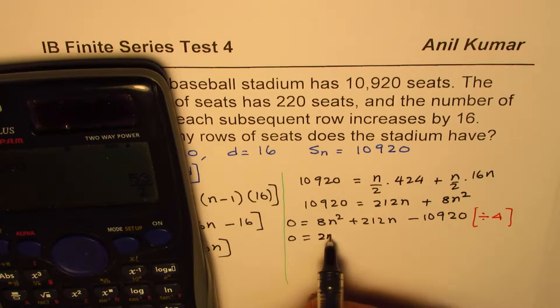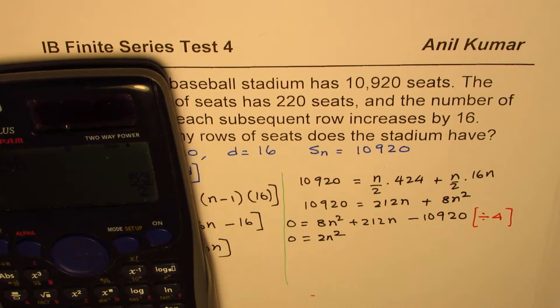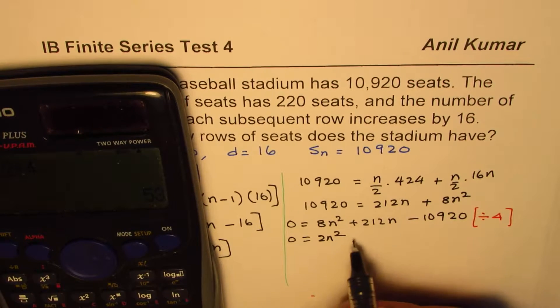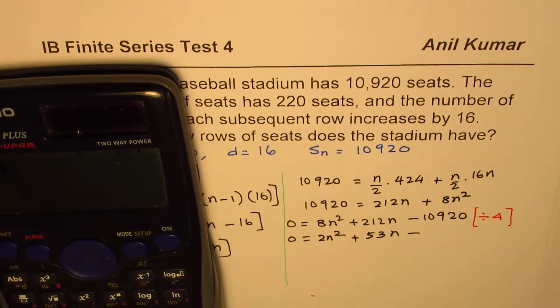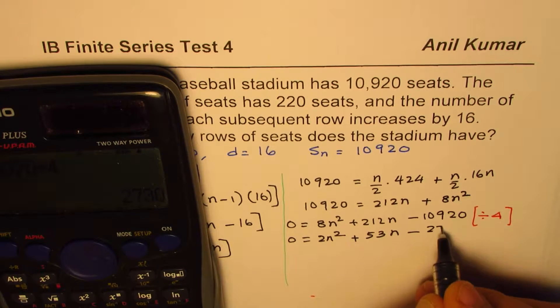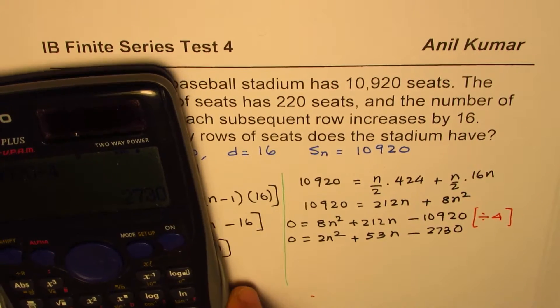8 divided by 4 is 2. So we get 2n². And 212 divided by 4 is equal to 53, plus 53n minus 10,920 divided by 4 equals to 2730. So that's a quadratic equation.